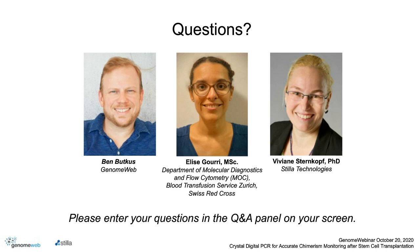The next question is for Stilla: do you have other consumable types apart from the Opal chip? Yes — we also have a second type of chip called the Sapphire chip. With the Sapphire chip, you can run a droplet volume of up to 30,000 droplets on a 25 microliter reaction, and can run up to four samples in one chip.